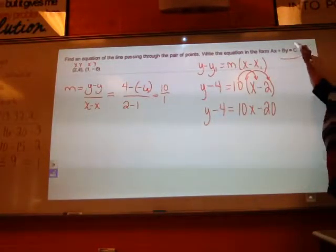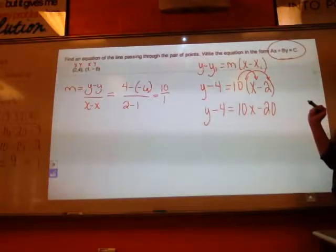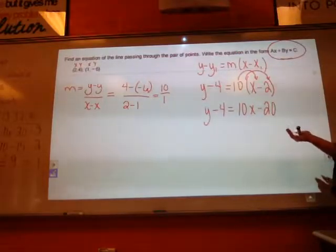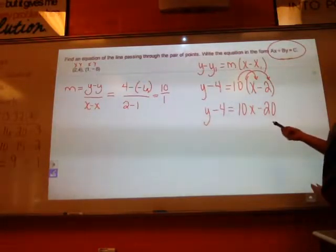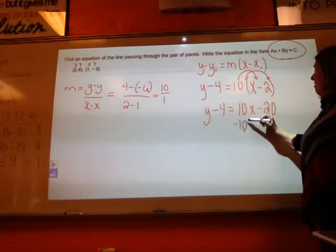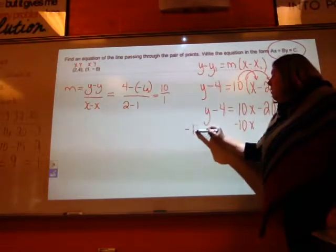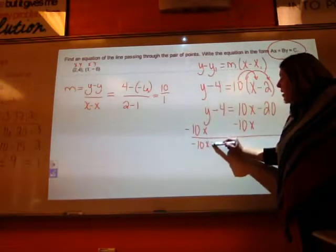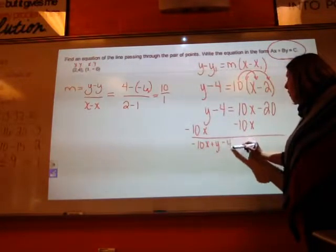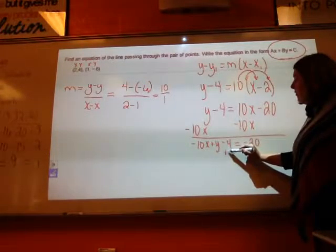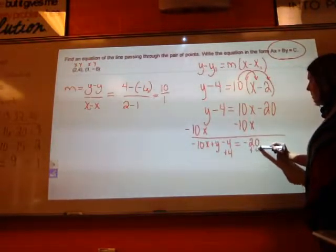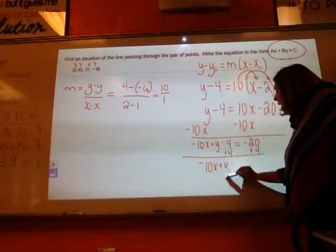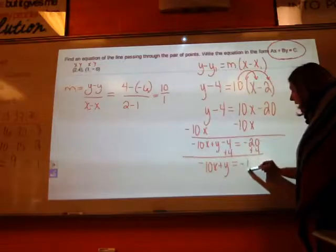And now remember, I want it in ax plus by equals c form. So that means I want my x's and my y's to be on one side, and then I want my constant to be on another. So I'm going to go ahead and just subtract 10x. It gives me negative 10x plus y minus 4 equals negative 20. And then I can add 4 to both sides, so that I get negative 10x plus y equals negative 16.